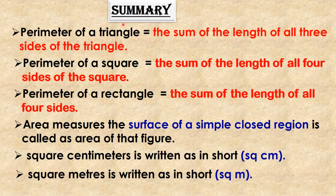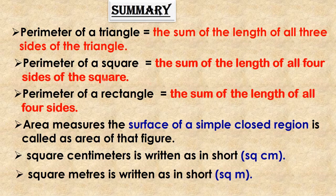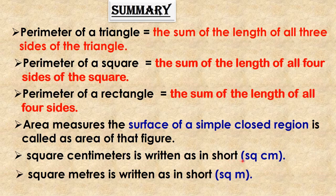Let us summarize what we have learned. First: the perimeter of a triangle equals the sum of the lengths of all three sides. Second: the perimeter of a square equals the sum of the lengths of all four sides. Third: the perimeter of a rectangle equals the sum of the lengths of all four sides. Fourth: area measures the surface of a simple closed region. Square centimeter is written as sq cm, and square meter is written as sq m.